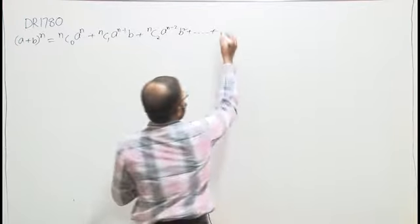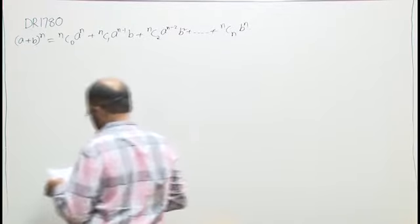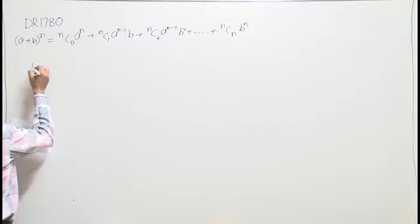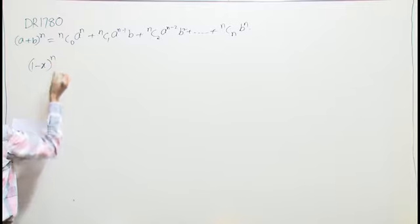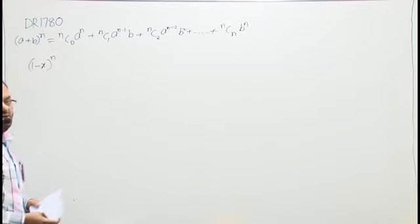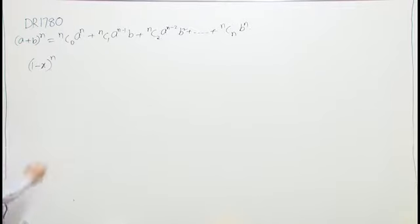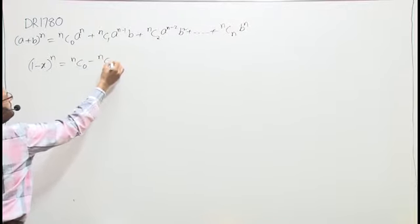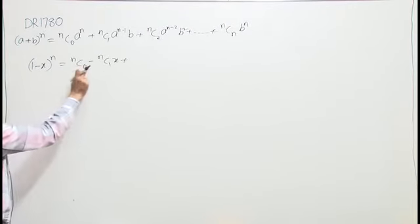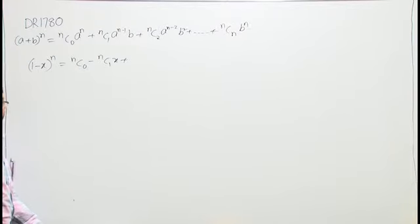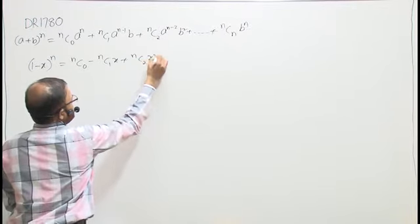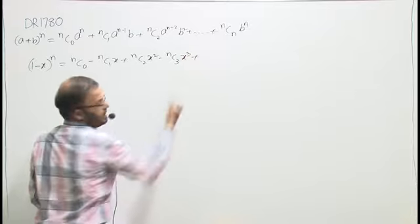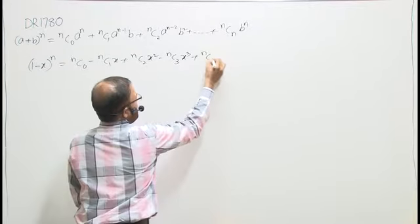Up to (n+1) terms. The second thing: if it is (1 - x) whole power n, I have to see the coefficient of x, x², etc. The expansion is: nC0 - nC1·x + nC2·x² - nC3·x³ + nC4·x⁴ ... and so on, with alternating minus and plus signs, up to (n+1) terms.